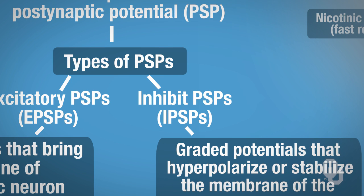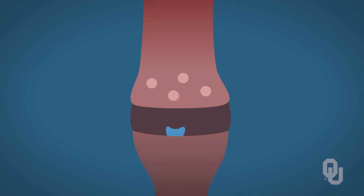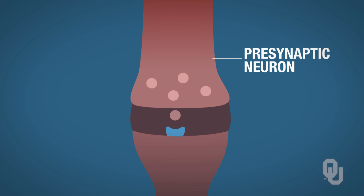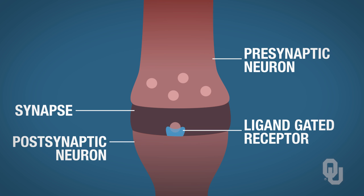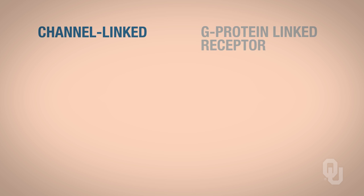Just to review: if we look at our presynaptic neuron, the presynaptic neuron will synthesize and secrete your neurotransmitter, and then the neurotransmitter will be exocytosed out of the presynaptic neuron, travel across the synapse, and bind to your ligand-gated receptor. We need to look at what's going to be happening once that neurotransmitter binds to the ligand-gated receptor on the postsynaptic neuron. We have two different responses that could be generated: one is channel-linked, and the other is called a G-protein-linked receptor.